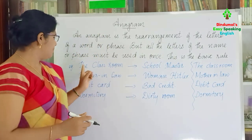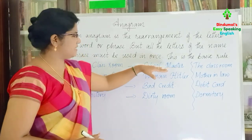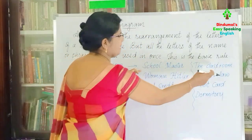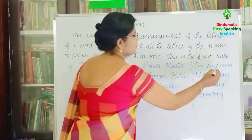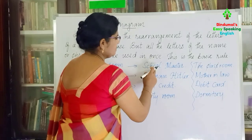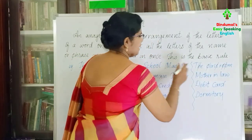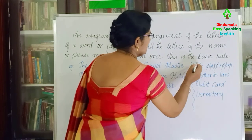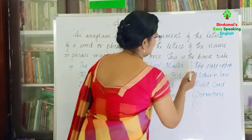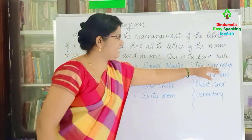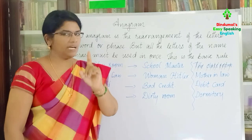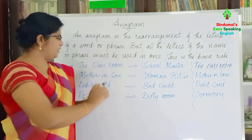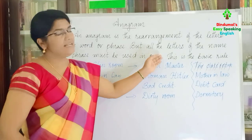Let us learn how that works. From 'classroom' we take the letters S, C, H, O, O, L, M, A, S, T, E, R — each used only once — and we get 'schoolmaster.' All those letters were taken only once. Only one time. So this is the rule for making an anagram: rearrangement of the letters to make another word.